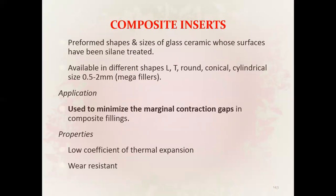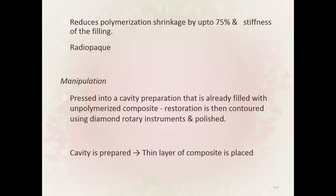Composite inserts are preformed shapes and sizes of glass ceramics whose surfaces have been silane treated. Available in different shapes — L, T, round, conical, cylindrical — in sizes 0.5 to 2 mm. Used to minimize marginal contraction gaps in composite fillings. Properties: low coefficient of thermal expansion, wear resistant, reduces polymerization shrinkage up to 75 percent, increases stiffness of filling, and is radiopaque.